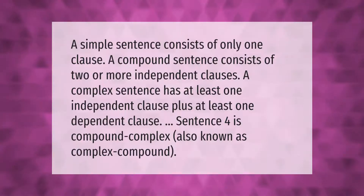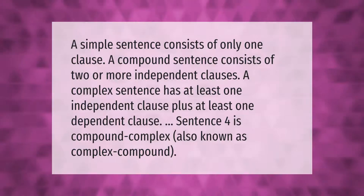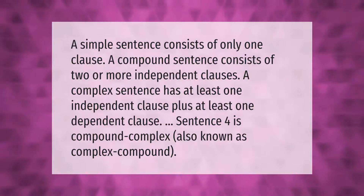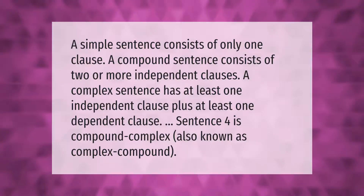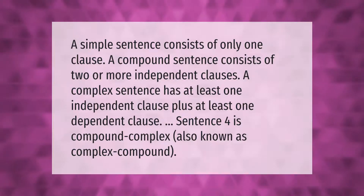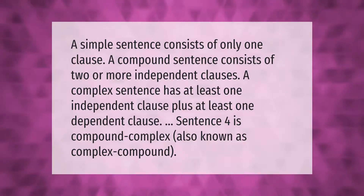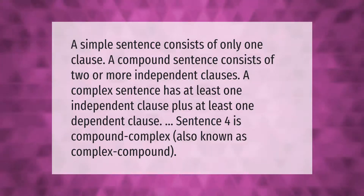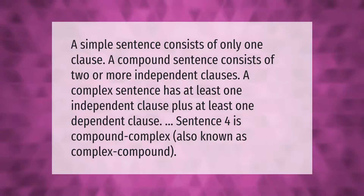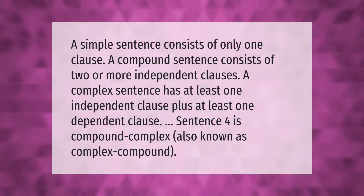A simple sentence consists of only one clause. A compound sentence consists of two or more independent clauses. A complex sentence has at least one independent clause plus at least one dependent clause. Sentence four is compound-complex, also known as complex compound.